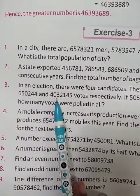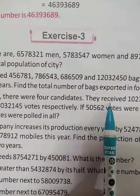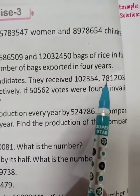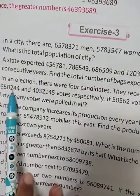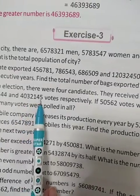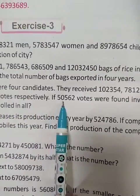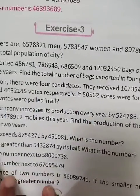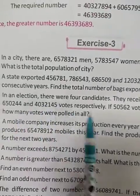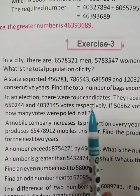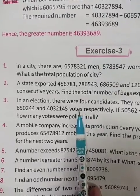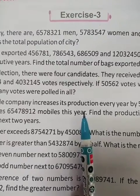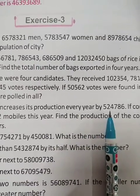Now question number 3. In an election there were four candidates who received 1,02,354 — 57,12,036 — 50,244 — 4,57,205 votes respectively. If 50,562 votes were found invalid, how many votes were polled in all? You will add all the digits. This sum you will do yourself.